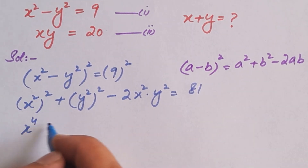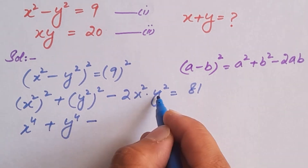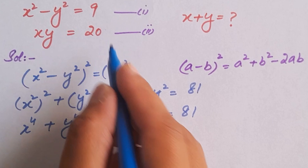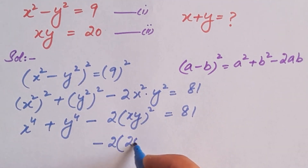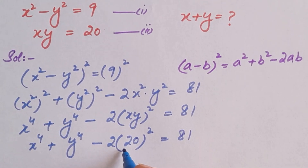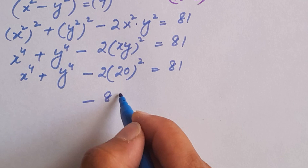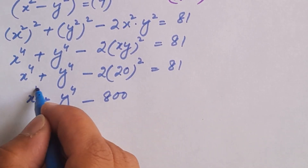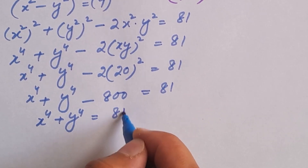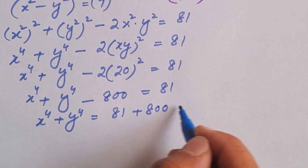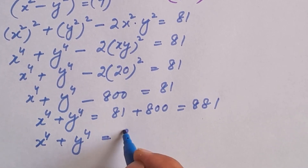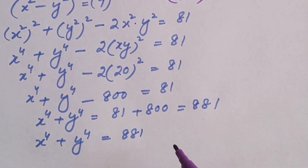So we have x to the power 4 plus y to the power 4 minus 2 times (xy) squared is equal to 81. As we know the value of xy, which is 20 from equation 2, we plug it in. 20 squared is 400, and 400 times 2 is 800. Therefore, x to the power 4 plus y to the power 4 is equal to 81 plus 800, which equals 881. We are going to name this as equation 3.